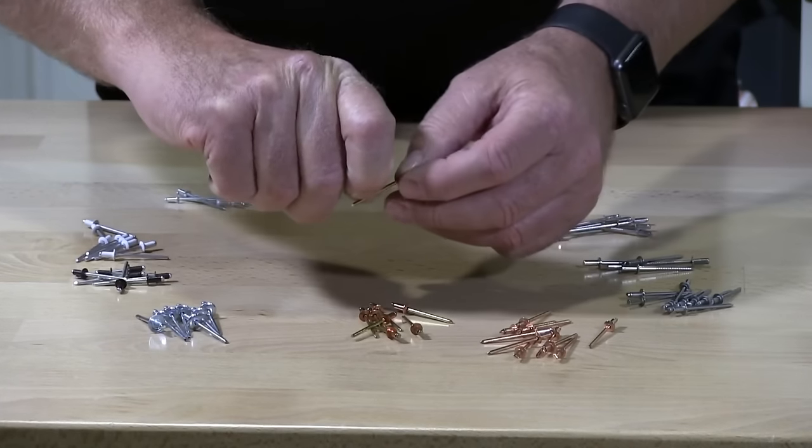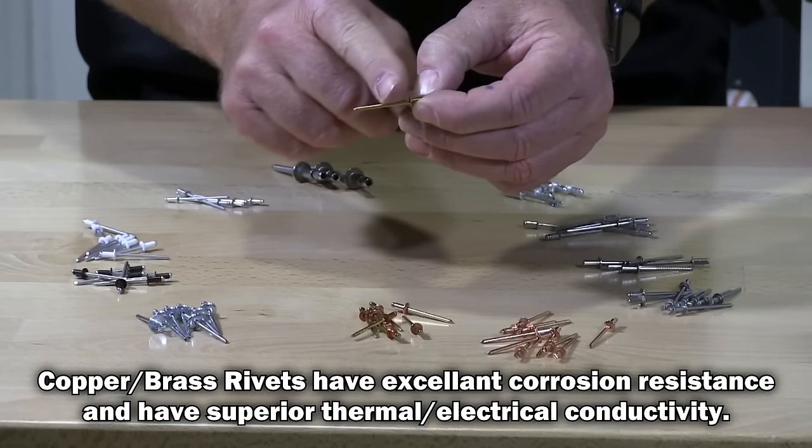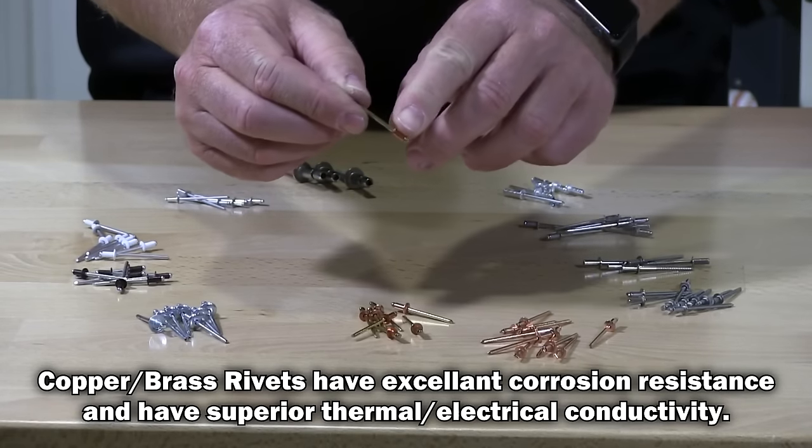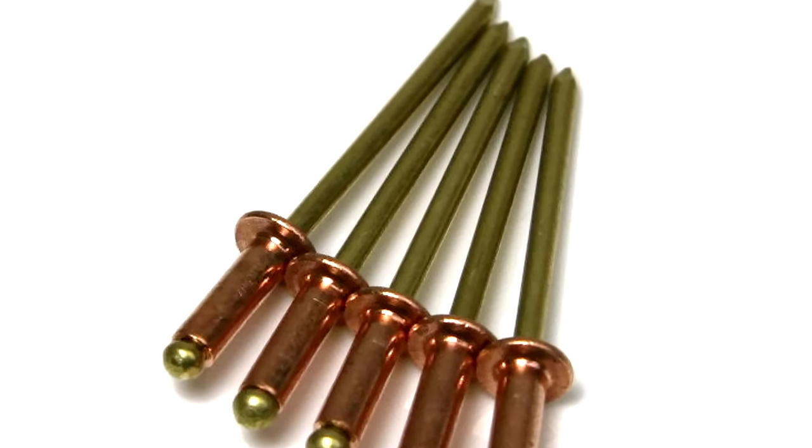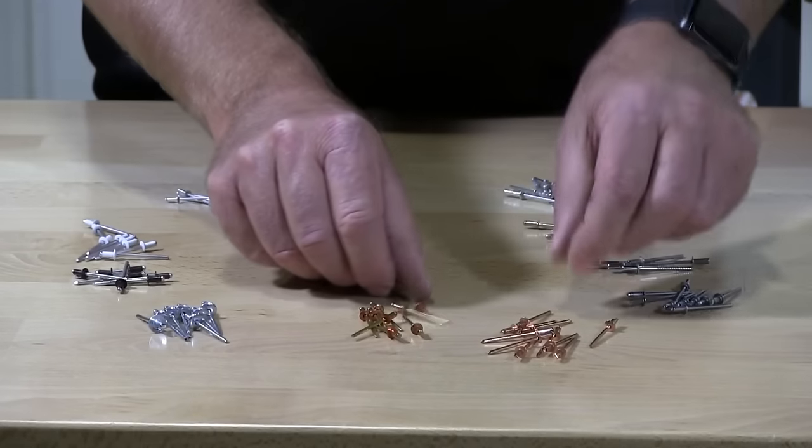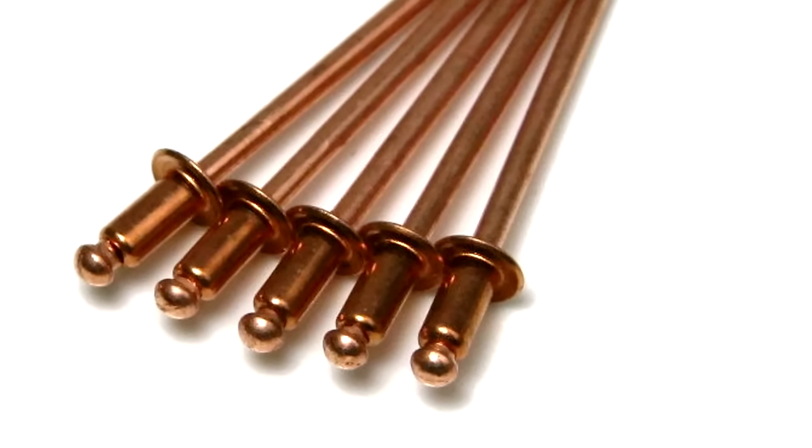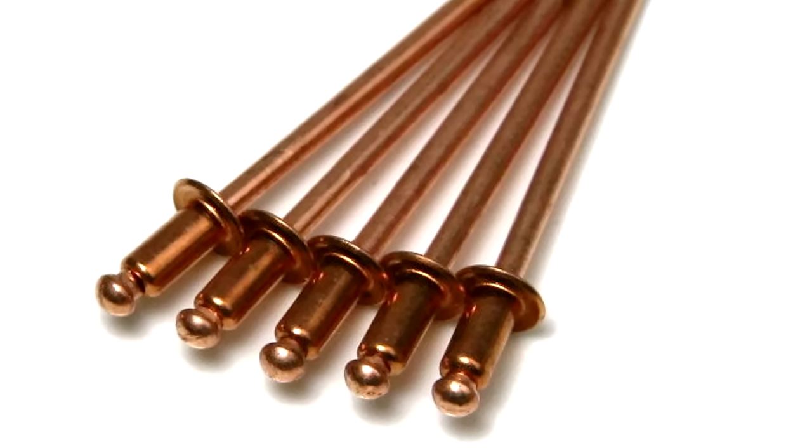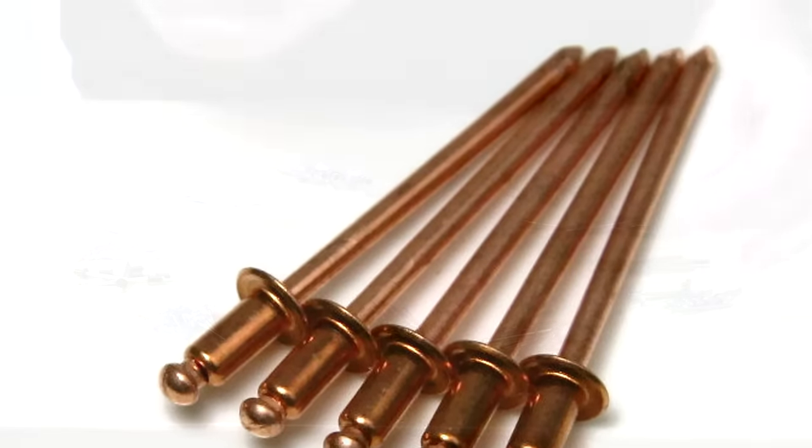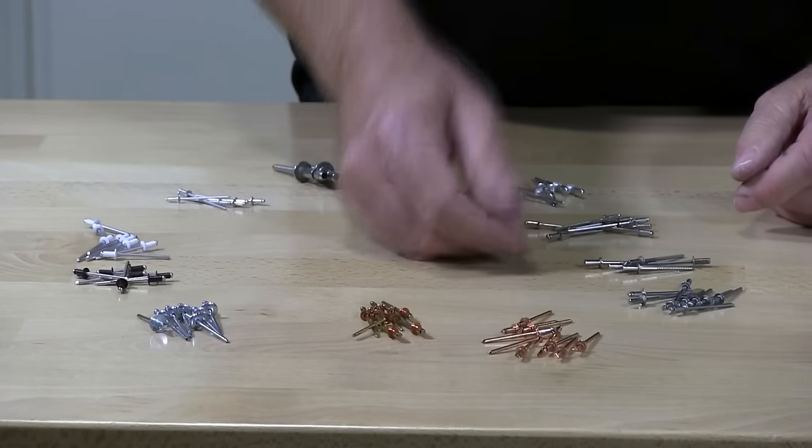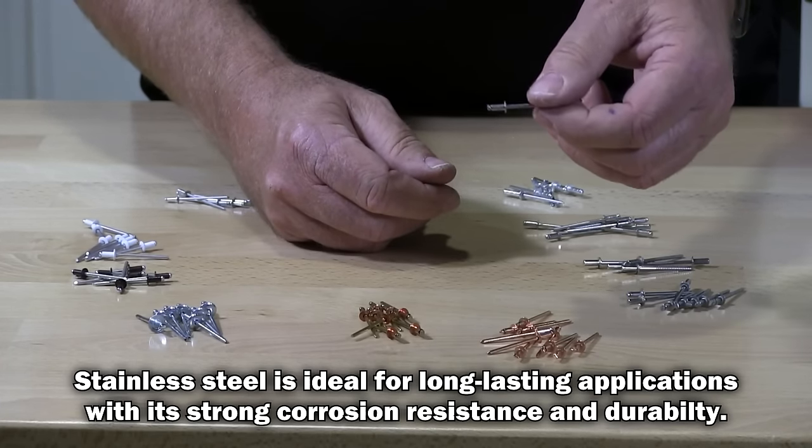These are copper brass rivets. The mandrel is brass and the hat is copper. However, the mandrel is actually steel with a plating of brass on top of it. These are 100% copper rivets. A lot of roofers use these rivets for flashing, many other applications, soffits, downspouts, so many different applications for the brass. These are stainless blind pop rivets.